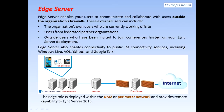The edge server is deployed within the DMZ or perimeter network and provides remote capability to Lync Server 2013. The Lync Server is positioned between two firewalls — that's why we call this area the DMZ, or demilitarized zone.